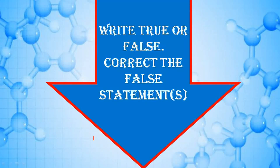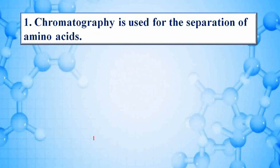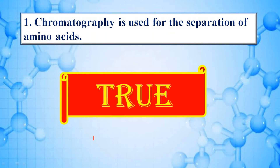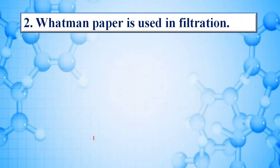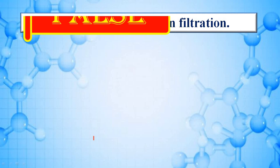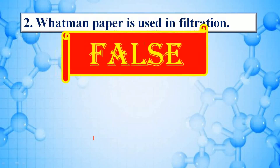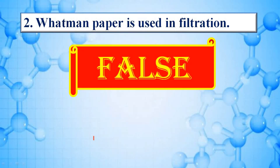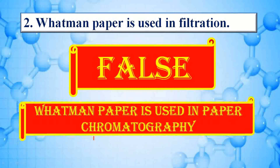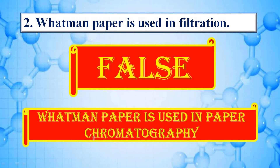Right true or false and correct the false statements. Chromatography is used for the separation of amino acids — answer is true. Whatman paper is used in filtration — answer is false; correct statement is Whatman paper is used in paper chromatography.